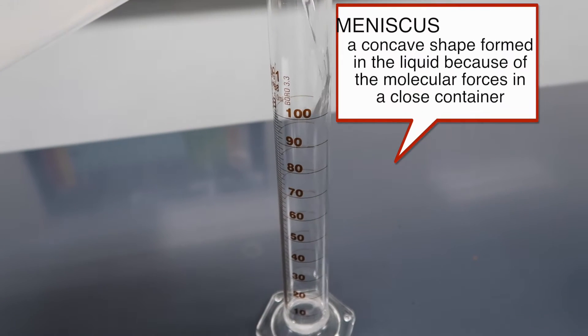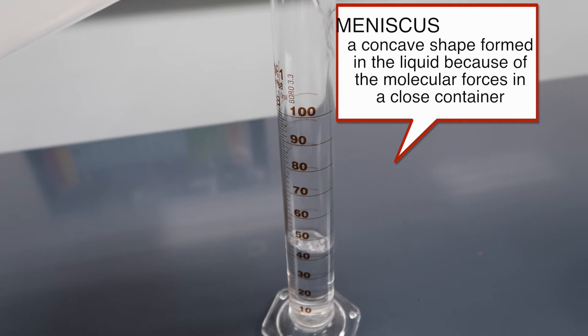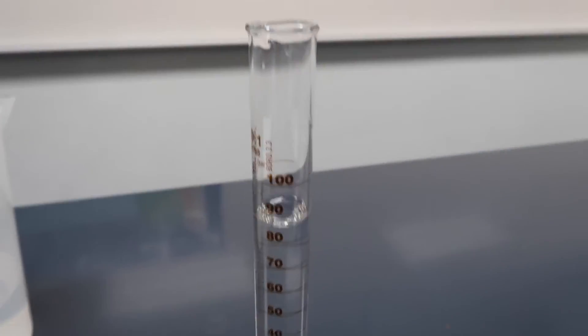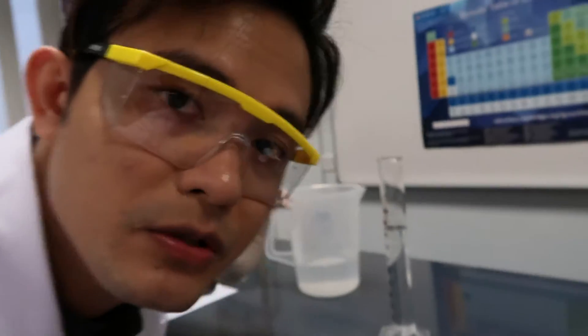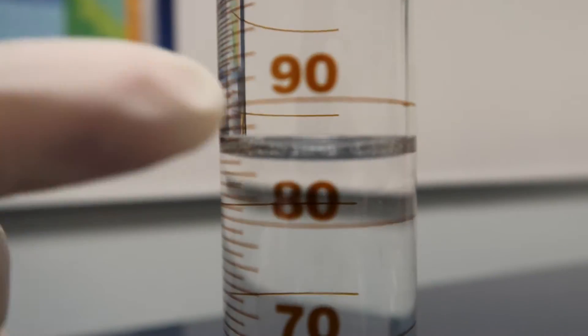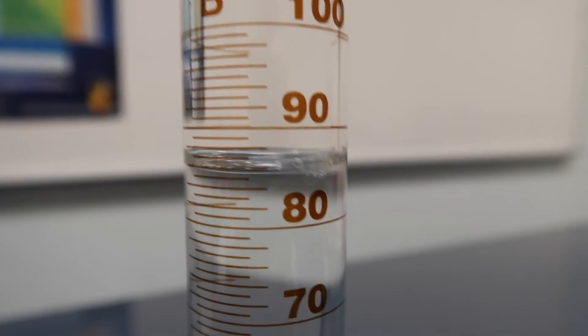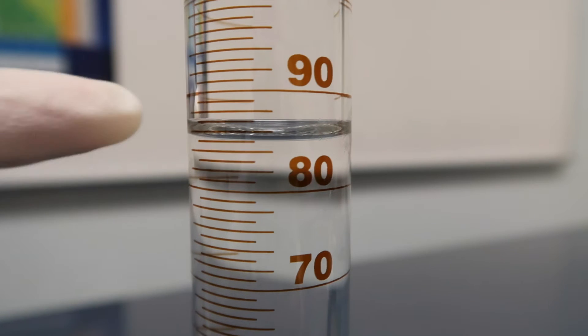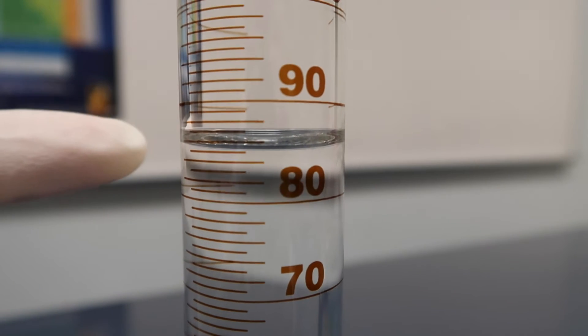Meniscus is when the liquid tends to stick to the side of a closed container. For example, this one. We need to read this at eye level. You guys will see, this is the meniscus. You can see the meniscus, that's the meniscus. Forces tend to stick at the side.